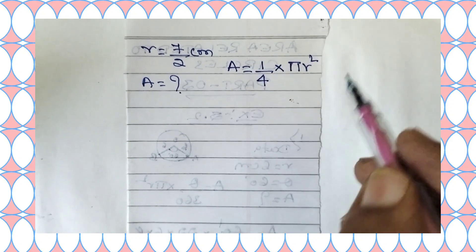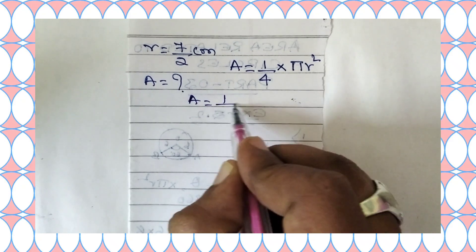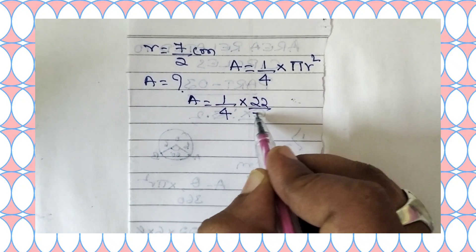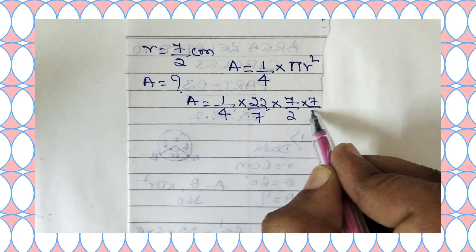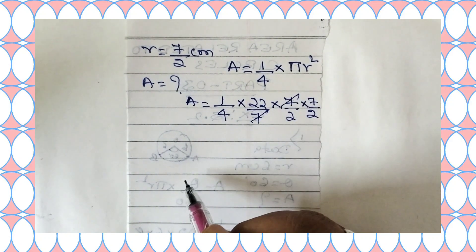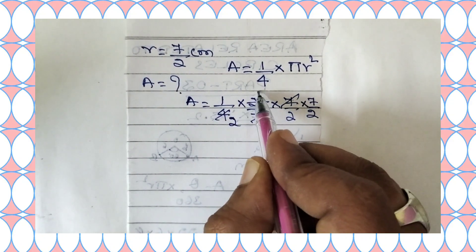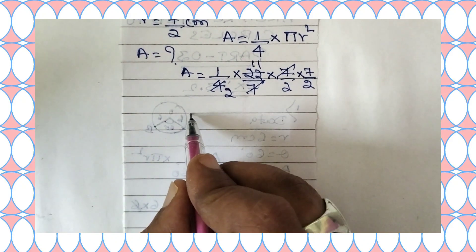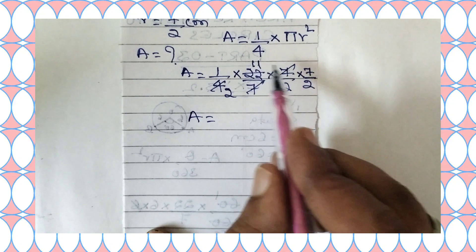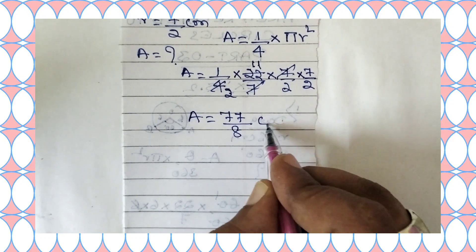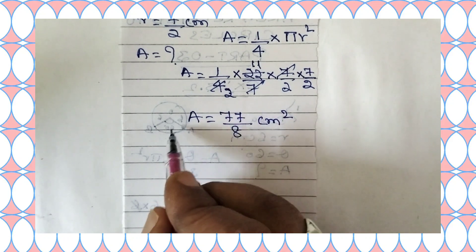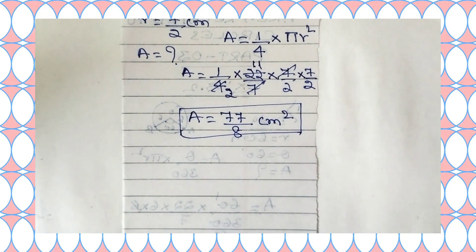Area of quadrant equals 1 by 4 into pi (22 by 7) into radius (7 by 2) into (7 by 2). The 7s cancel, and we get 11 into 7 divided by 2 into 2 into 2, which equals 77 divided by 8 centimeter square. So the area of the quadrant is 77 by 8 centimeter square.